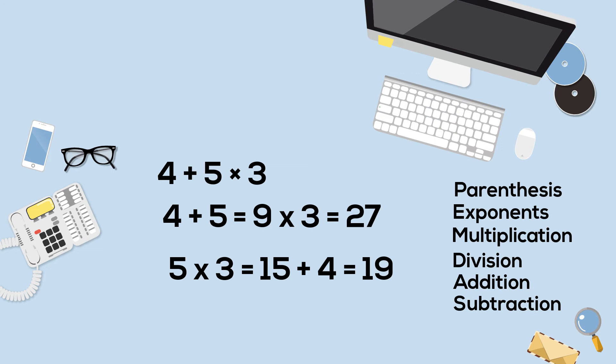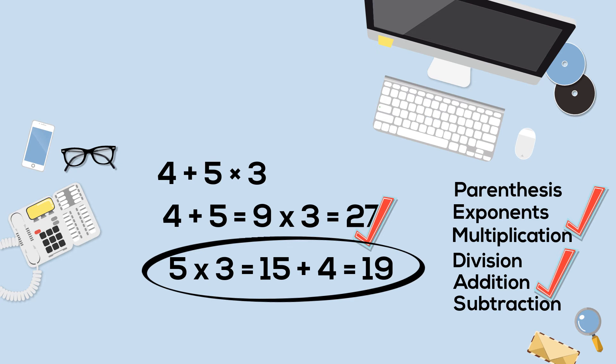The correct answer is 19. You first complete multiplication, which is 5 times 3, which is equal to 15. Then you complete addition, and that is 19. Remember, PEMDAS, follow that for the correct order of operations.